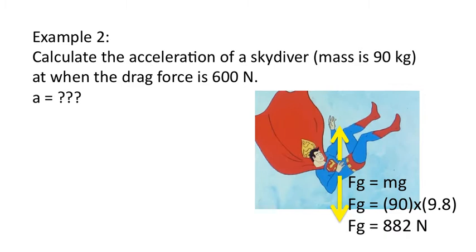So now we're going to work on the same problem, except this time, there is an additional force. Calculate the acceleration of a skydiver when the drag force is 600 newtons. So again, the force of gravity doesn't change. It's 882 newtons. Positive direction is still down. Why is it down? It's down because the person is accelerating downwards. That's their direction of movement.